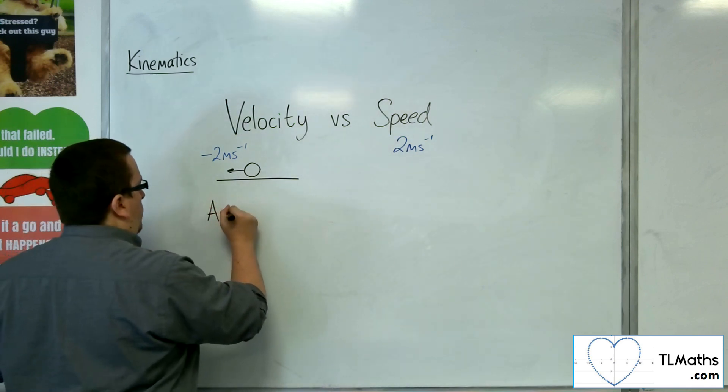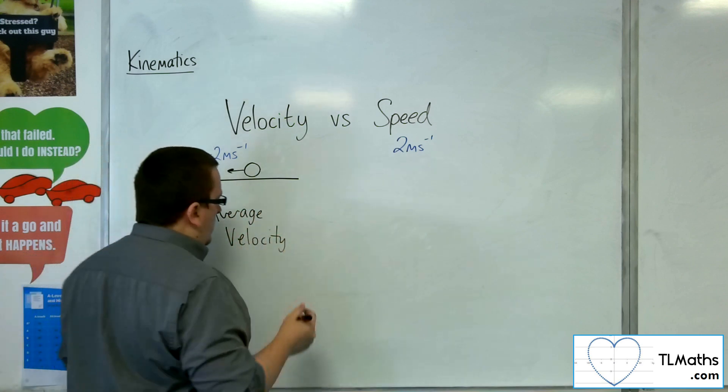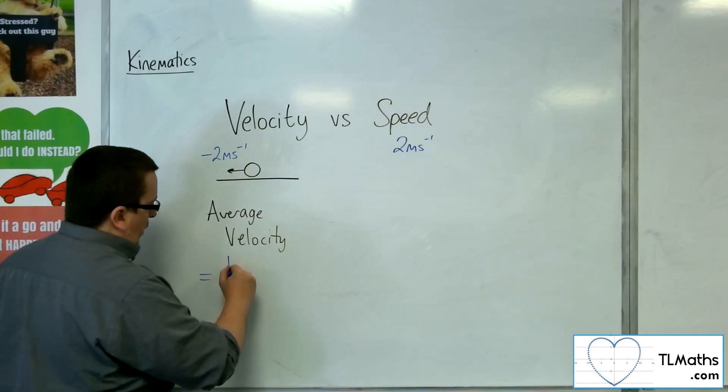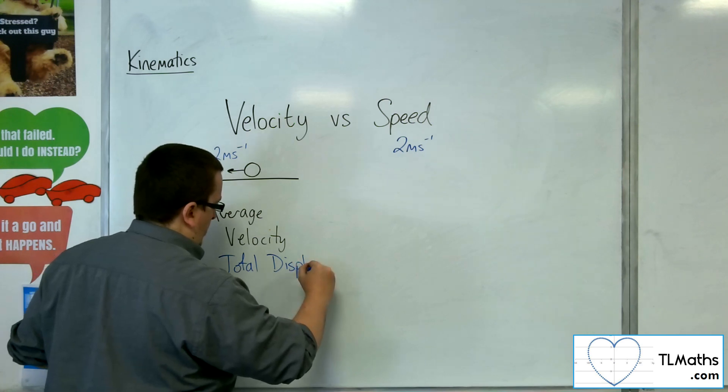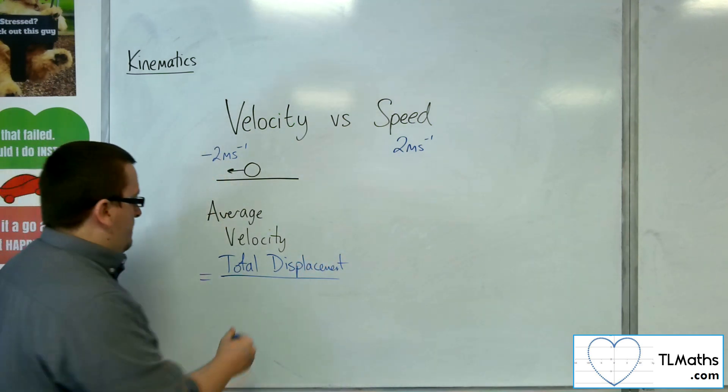If we look at average velocity, then the average velocity is the total displacement of the particle over the total time.